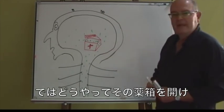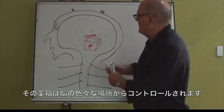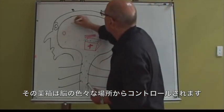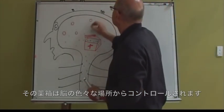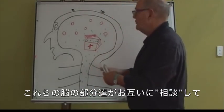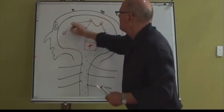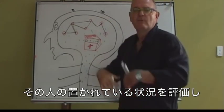So how do we open and how do we close this drug cabinet? Well, the cabinet is under control from various areas up in the brain. And these areas in the brain talk to each other. They weigh up the situation of the world.